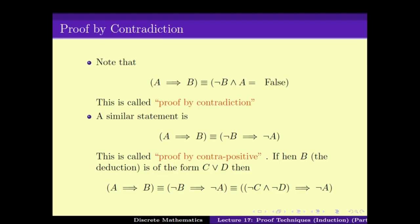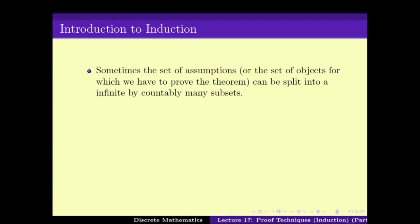We also looked at two more proof techniques: proof by contradiction and proof by contrapositive. Proving A implies B is the same as proving that not-B and A is false — this is called proof by contradiction — whereas in the proof by contrapositive, you prove not-B implies not-A. We have seen various problems for which these different proof techniques are applied.